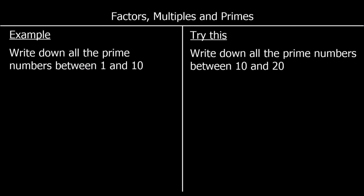Moving on to prime numbers now. A prime number is a number with exactly two factors. So write down all the prime numbers between 1 and 10. I'm going to go through all the numbers between 1 and 10 and check if they are prime. The number 1 is only 1 times 1, so it's only got one factor. So 1 is not a prime number because it doesn't have two factors.